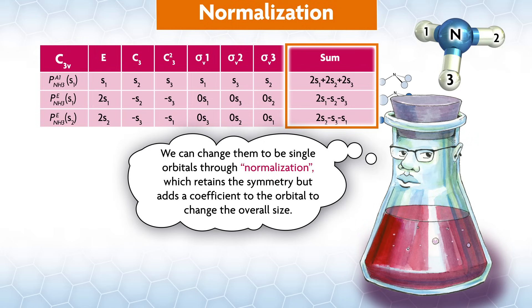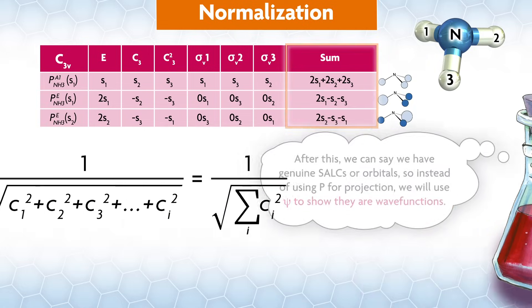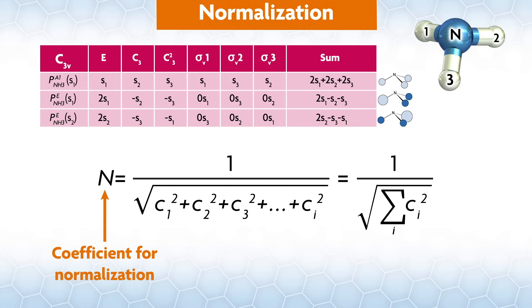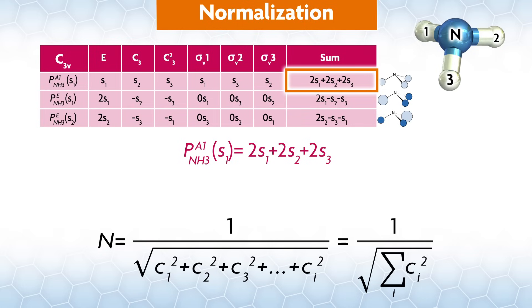After this, we can say we have a genuine SALC or orbital, so instead of using p for projection, we will use psi to show their wave functions. The coefficient for normalization n is found using a simple equation, where c is the coefficient for all the constituent pieces from your bases. Our equation for projection of a1 on s1 was this, which we could think of this way. The coefficients are then c1 equals c2 equals c3 equals 2 in this case.